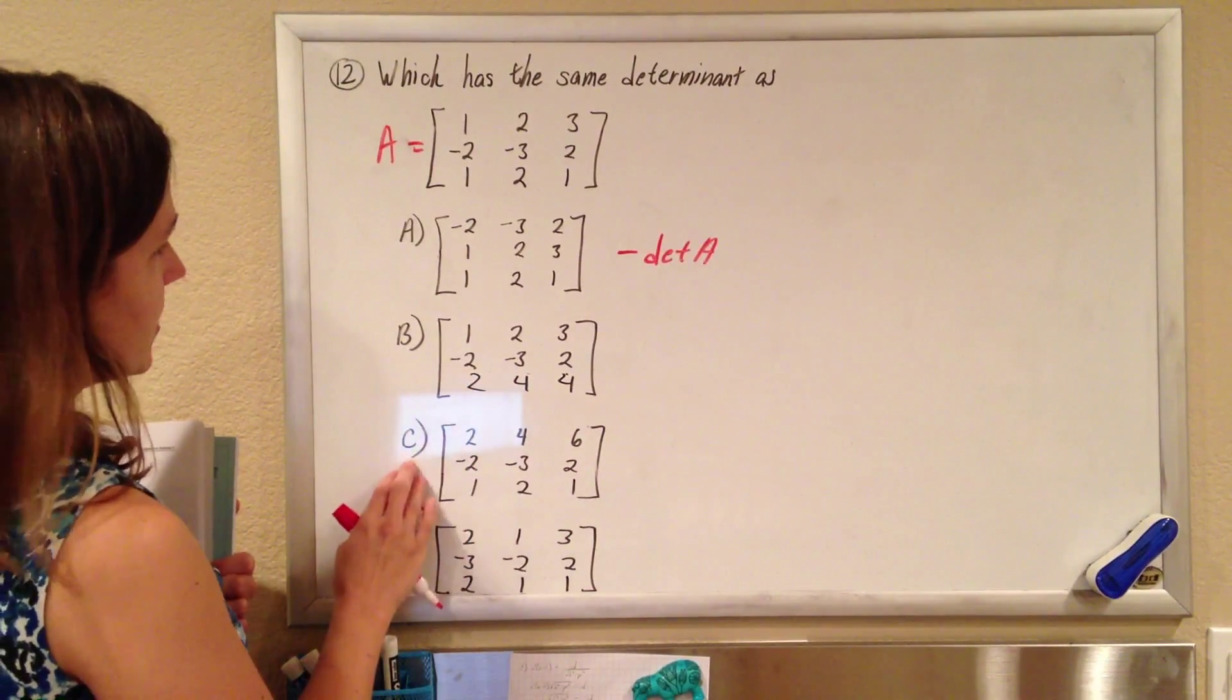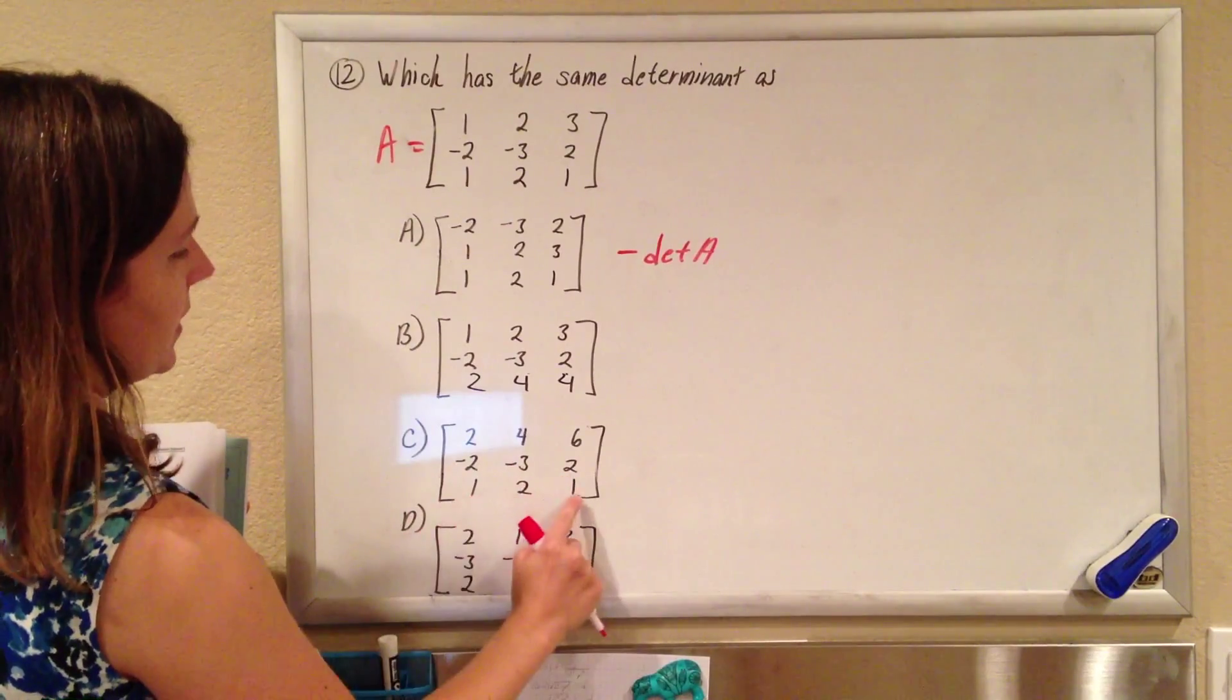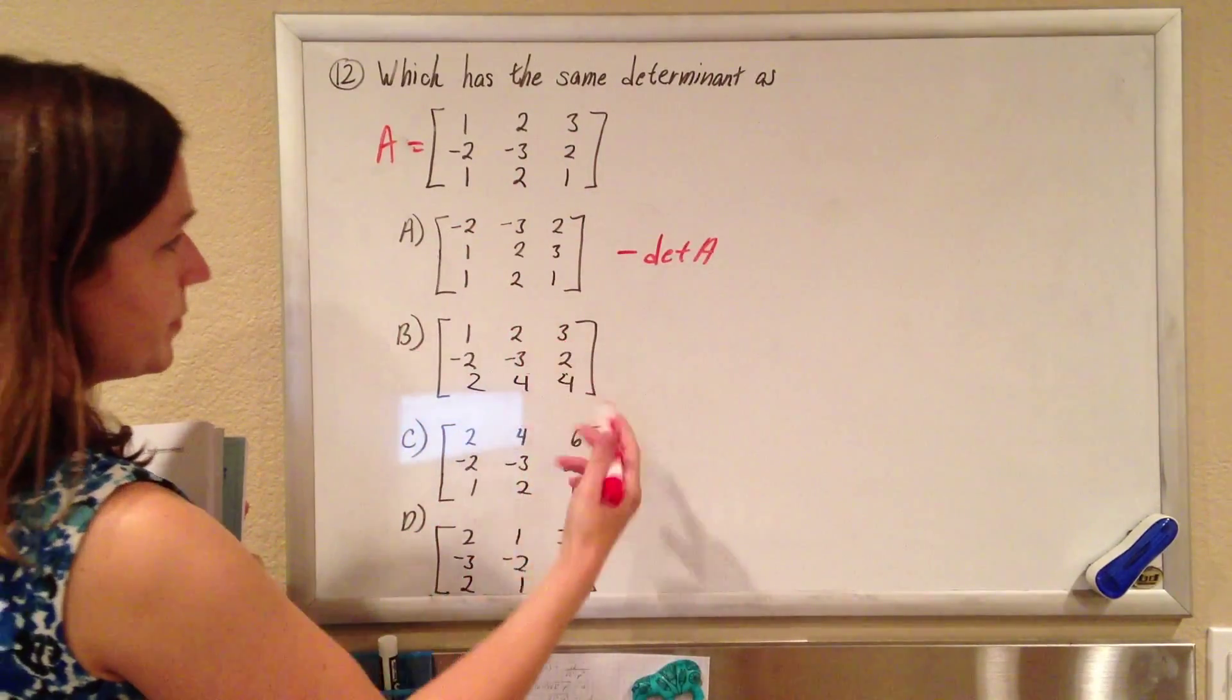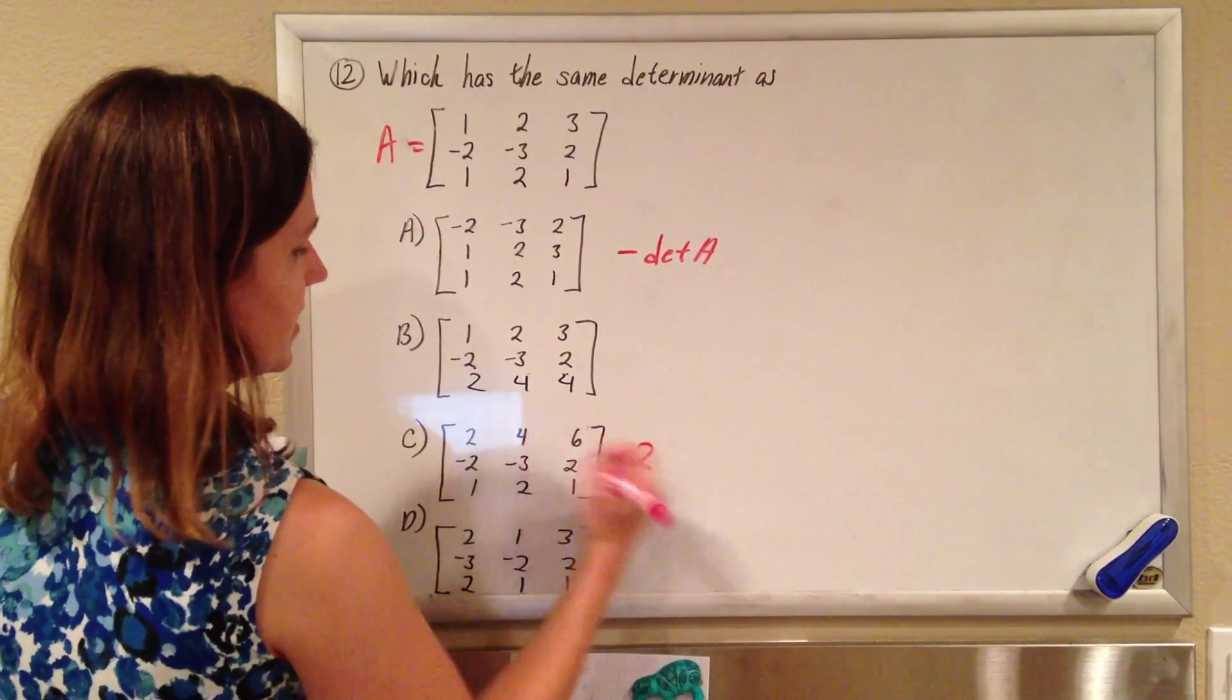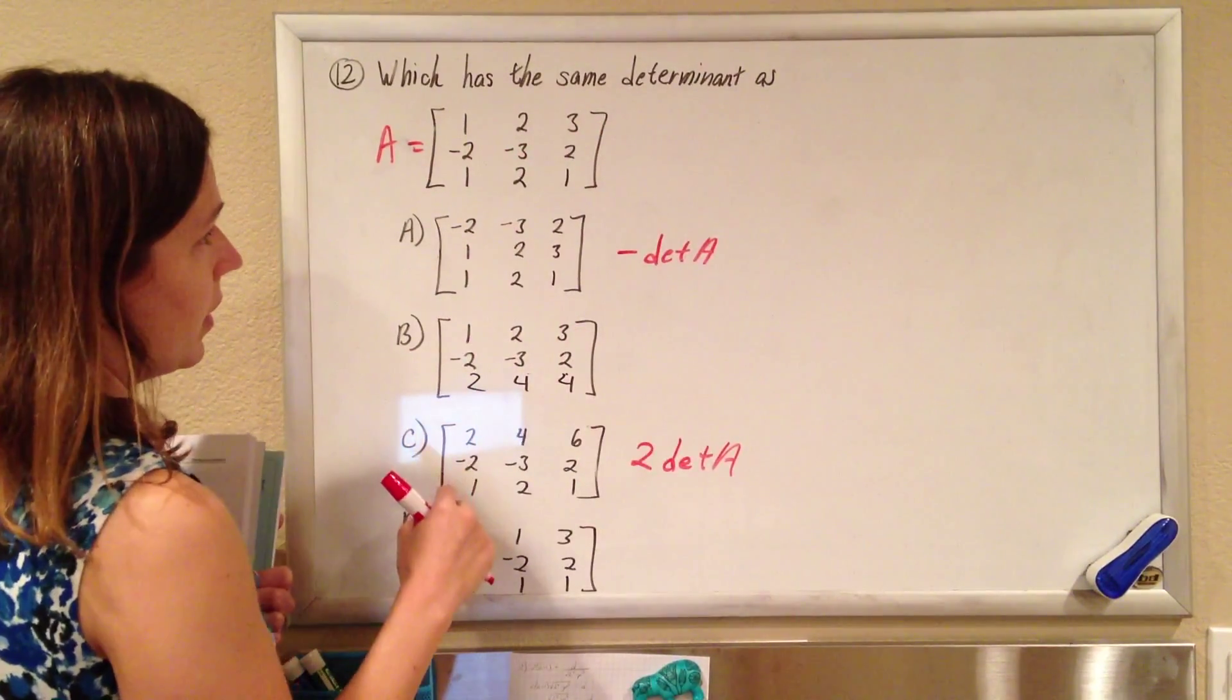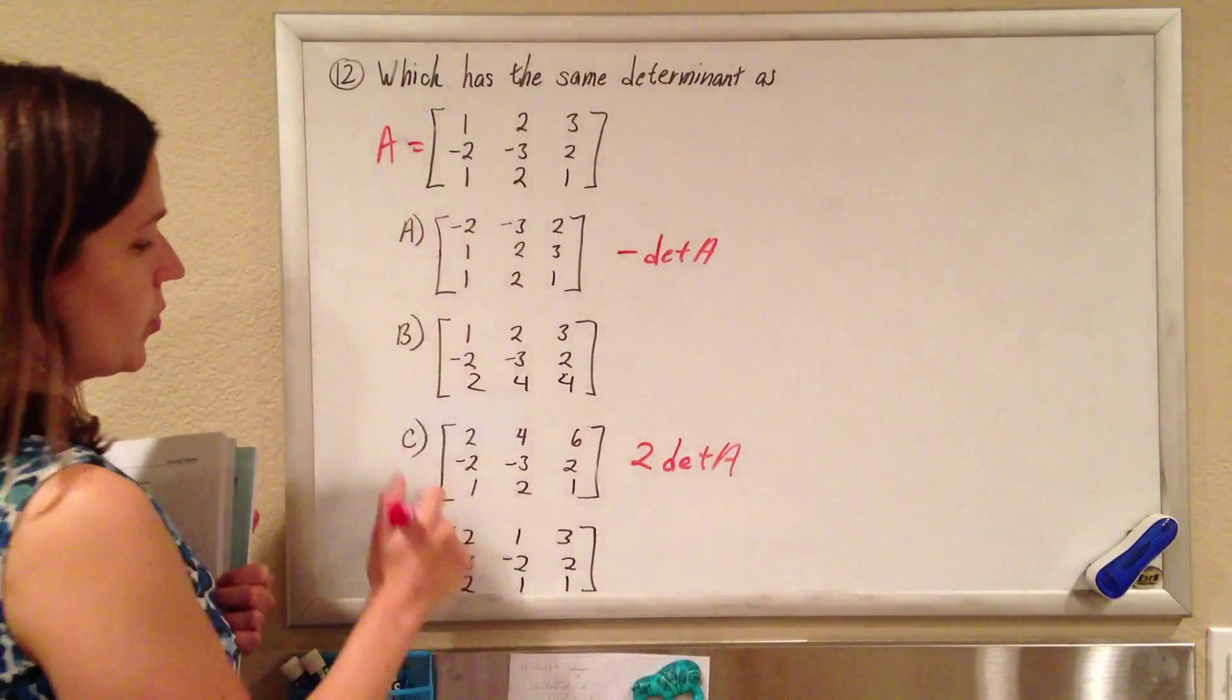This one for C, we notice that the top row is, in fact, twice the top row here, with the other rows completely left alone. So we have a rule that if we multiply a row of a matrix by a constant, the determinant of the new matrix is that constant, in this case 2, times the determinant of the old matrix. So if you multiply a row by a constant, you multiply the determinant by that same constant. So this is twice that, so this is not our guy.